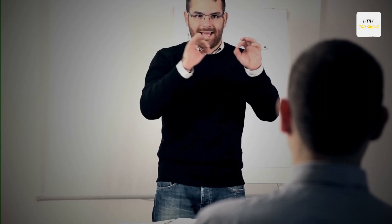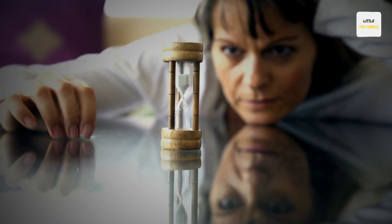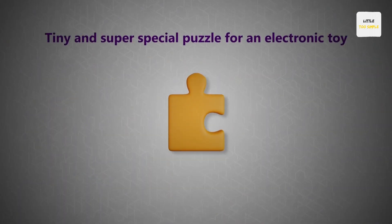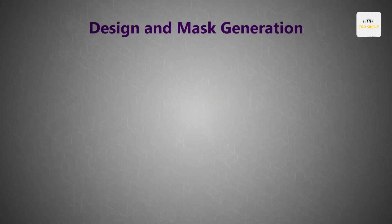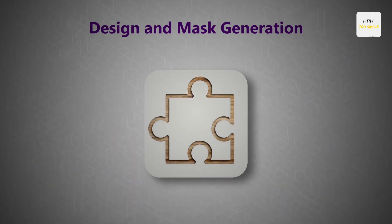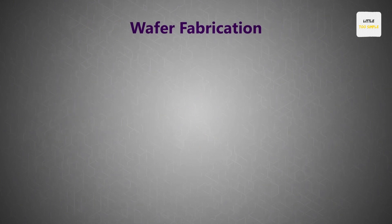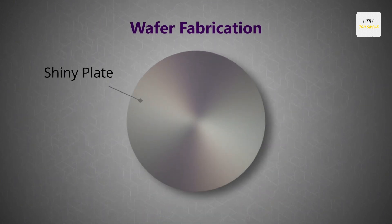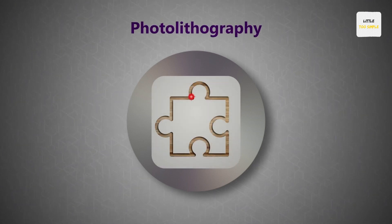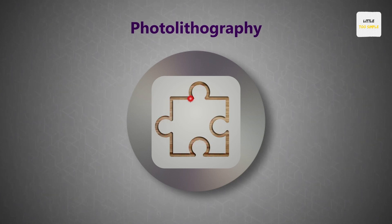While we could explain each of these steps from a technical point of view, here is an oversimplified explanation. Imagine making a very tiny and super special puzzle for an electronic toy. First, we draw a picture of the puzzle on a computer, then make a special stencil to copy the picture later — that's design and mask generation. We then take a small shiny plate, make it smooth and clean — that's the puzzle base, or wafer fabrication. Next, we use the stencil and a bright light to draw the picture onto the shiny plate — that's photolithography, like tracing the picture onto the puzzle base.